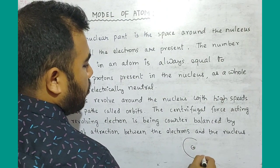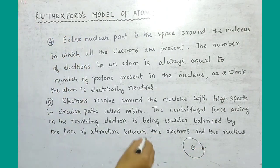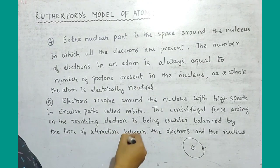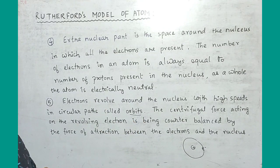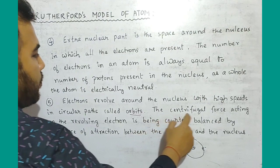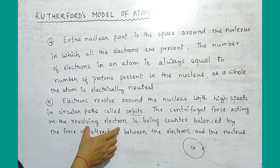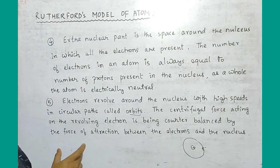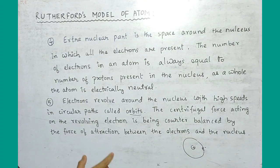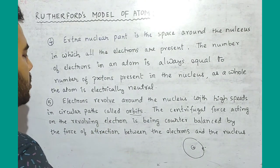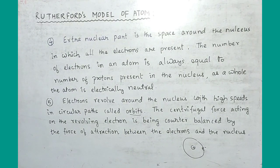When the electrons move, they revolve in a circular path around the nucleus, which we call an orbit. The centrifugal force acting on the revolving electrons is counterbalanced by the force of attraction between the electrons and the nucleus. This is why Rutherford's model of the atom is compared to the solar system.